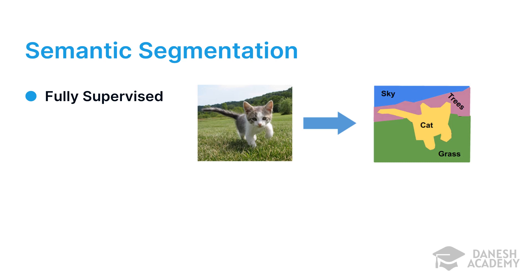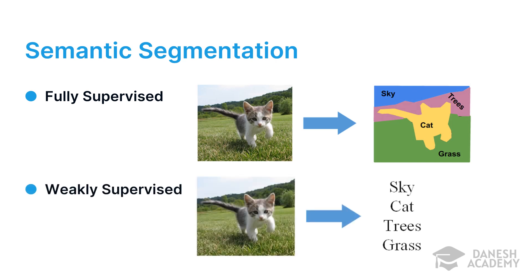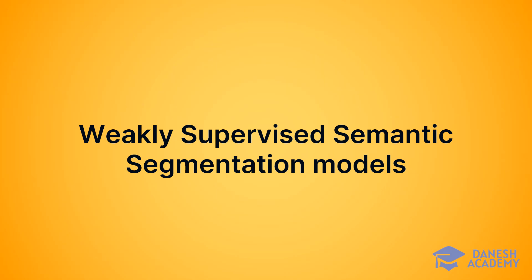Obviously, creating such datasets is a really time-consuming task and requires many experts. On the other hand, there is a different type of semantic segmentation model which uses only image-level annotations to learn the segmentation task. These models are known as weakly supervised semantic segmentation models. As shown in the example on screen, the weakly supervised dataset only has knowledge of which objects exist in the image, but not where exactly those objects are.